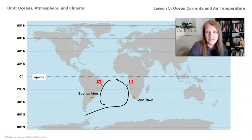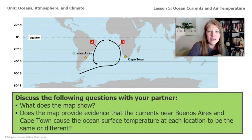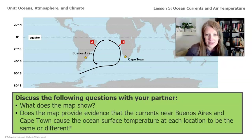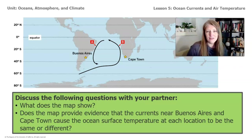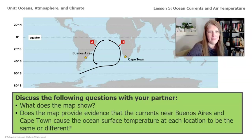Now I'd like you to either discuss with your partner or take a moment to think about what you're seeing here. Two questions: one, what does the map show, and two, how does the map provide evidence that the currents near Buenos Aires and Cape Town cause the ocean surface temperature at each location to be the same or different? Go ahead and pause the video, jot down your ideas, and if you have a partner, tell them what you're noticing.